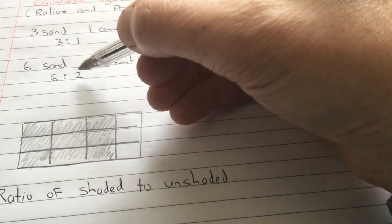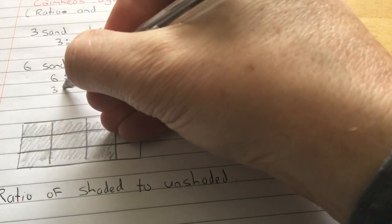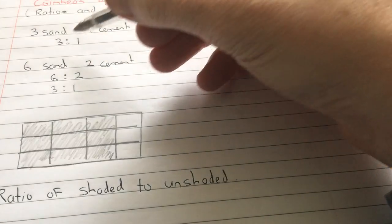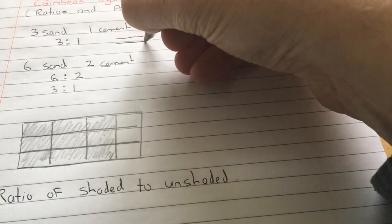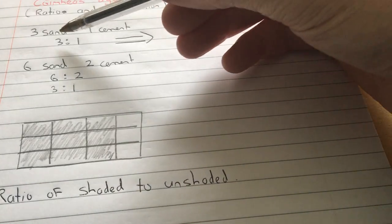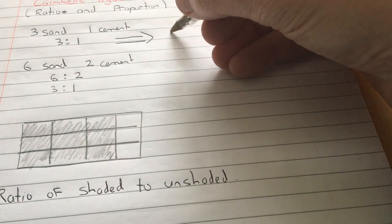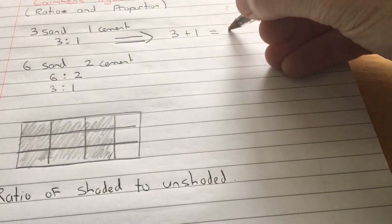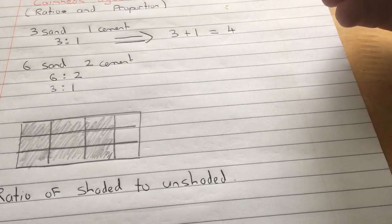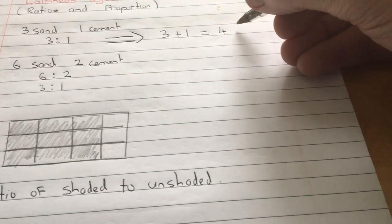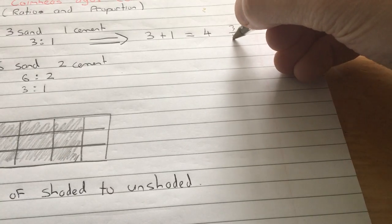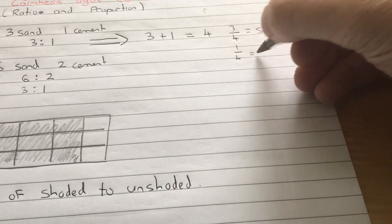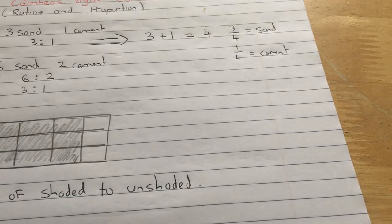And if you notice, six is to two breaks down anyway. Three is to one. You can find a common denominator and divide across. Essentially, what this is saying is that if you've got three shovels of sand and one shovelful of cement, in total you've got four shovels and three quarters of them are sand and one quarter is cement.